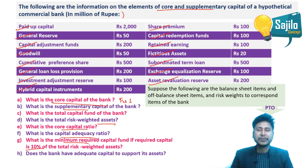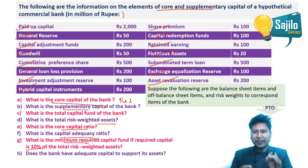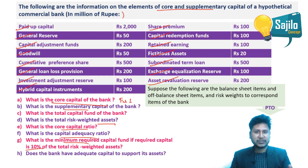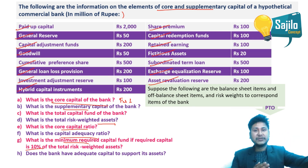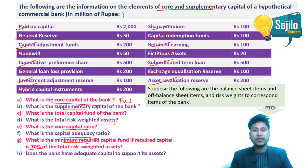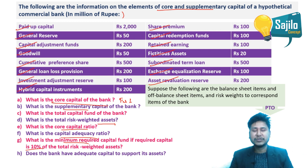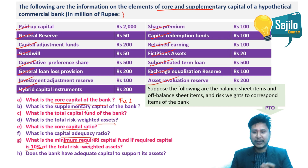There is a direct relationship between capital and assets. Capital consists of two tiers: Tier 1 and Tier 2. Tier 1 capital is the stronger component. If Tier 1 capital is strong, that means the bank can support its assets and service its loans.